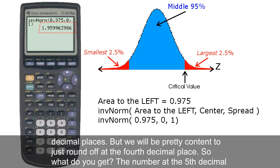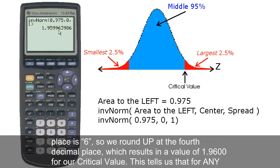But we will be pretty content to just round off at the fourth decimal place. So what do you get? The number at the fifth decimal place is 6.